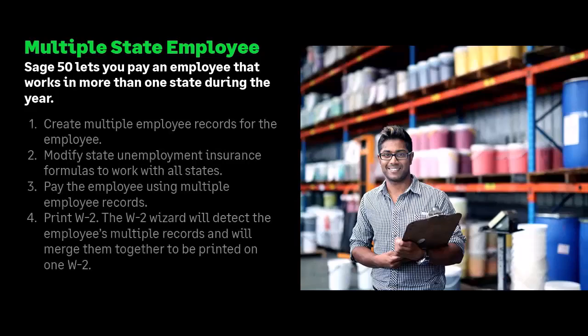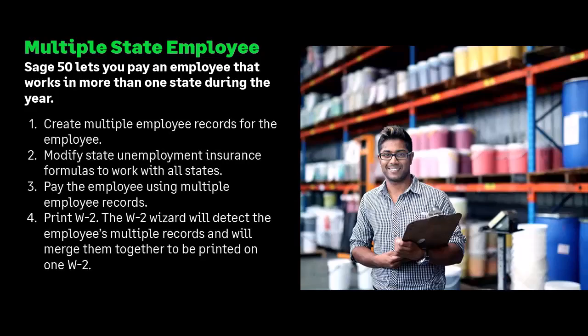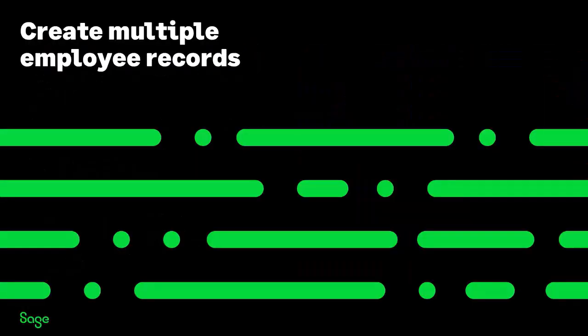Setting up this type of employee in the program is a four-step process. You'll first create multiple employee records for the employee, then modify your state unemployment insurance formulas to work with all states. You can then pay the employee using multiple employee records so that the state withholding is deducted correctly for each state. At the end of the year, you can print the employee's W-2. When set up correctly, the W-2 wizard will detect the employee's multiple records and merge them together to be printed on one W-2.